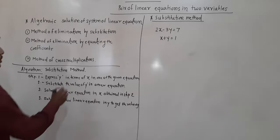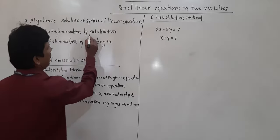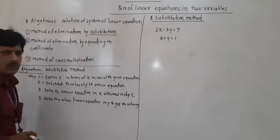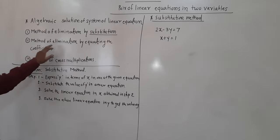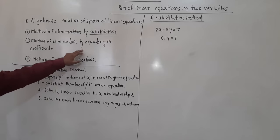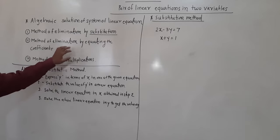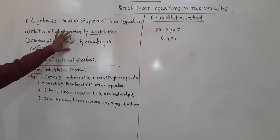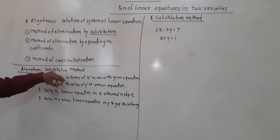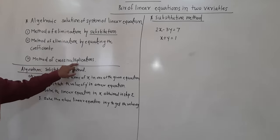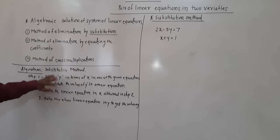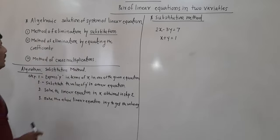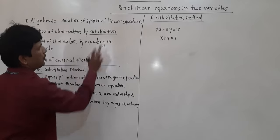Already we have seen this substitution method in class 9, so you will understand immediately. The method of elimination by equating the coefficients — that we have seen. So these two methods we have already seen. The third one, method of cross multiplication, is also something we are going to see. Now we are going to see about the method of elimination by substitution.